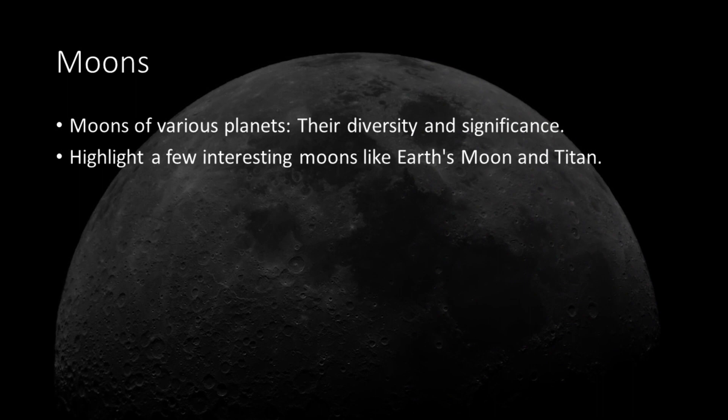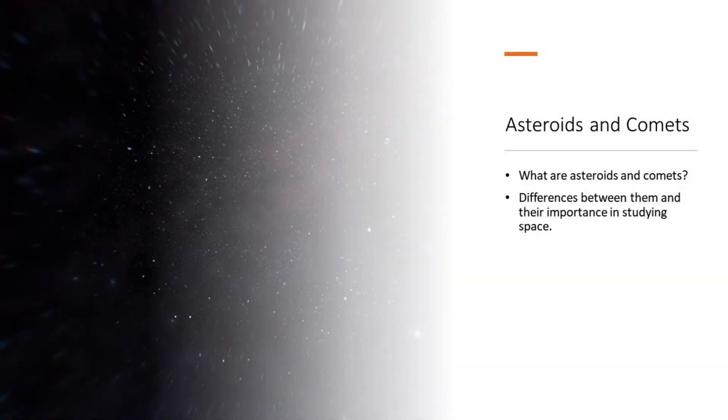Moons, the loyal companions of planets, come in various forms, from airless rocky worlds to icy bodies with subsurface oceans. Europa, one of Jupiter's moons, tantalizes scientists with the possibility of extraterrestrial life beneath its icy crust. Moons are not mere satellites, they are windows into the conditions necessary for life, prompting us to explore these celestial bodies for signs of habitability beyond Earth.